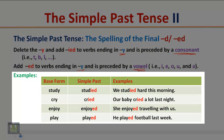Examples: 'Study' ends in Y preceded by the consonant D — delete Y and add IED: we studied hard this morning. 'Cry' ends in Y preceded by the consonant R — we add IED: our baby cried a lot last night. 'Enjoy' ends in Y but is preceded by the vowel O — add only ED: she enjoyed traveling with us. 'Play' ends in Y preceded by the vowel A — add ED: he played football last week.